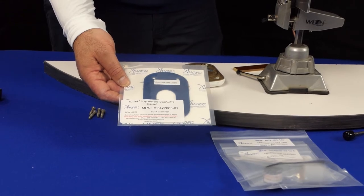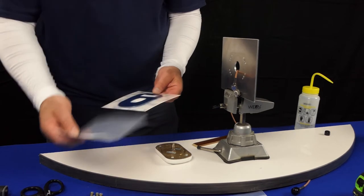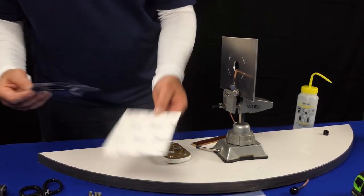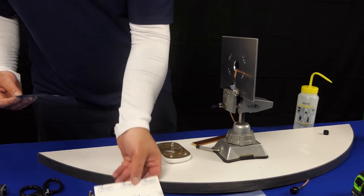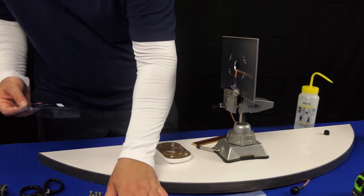Gasket installation. Avdex Hi-Tac Conductive Polyurethane Gaskets are supplied with protective release film on both sides of the gasket. Remove the gasket from the protective packaging, taking care not to fold or bend it. Leave the release film in place until ready to install the gasket.